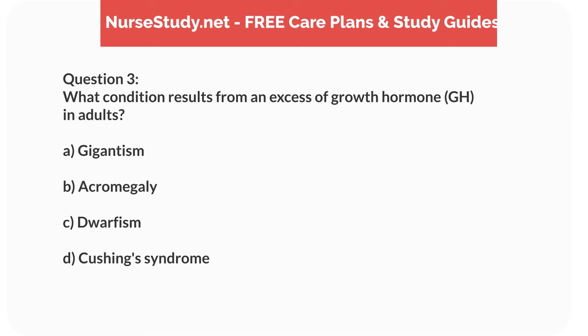Question 3. What condition results from an excess of growth hormone (GH) in adults? A. Gigantism. B. Acromegaly. C. Dwarfism. D. Cushing's Syndrome.